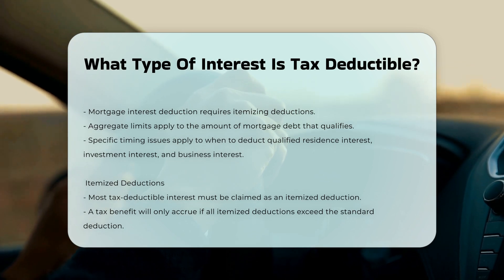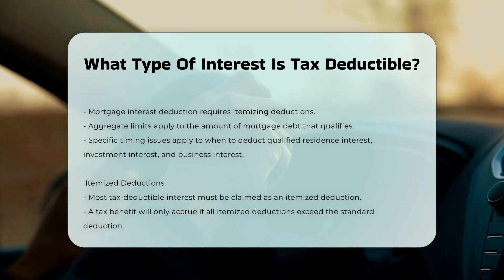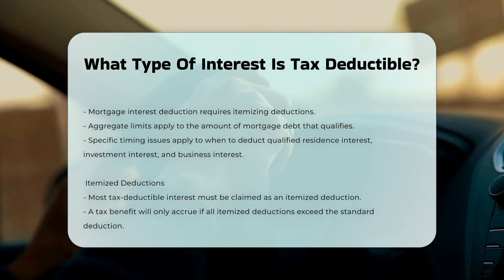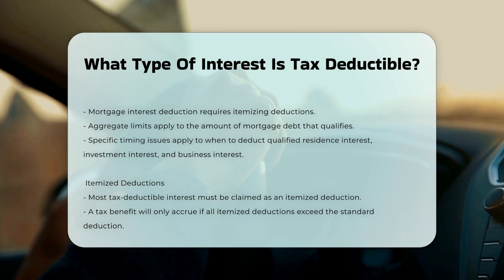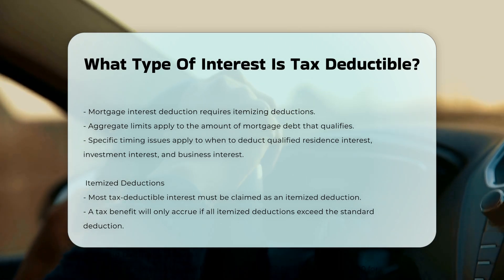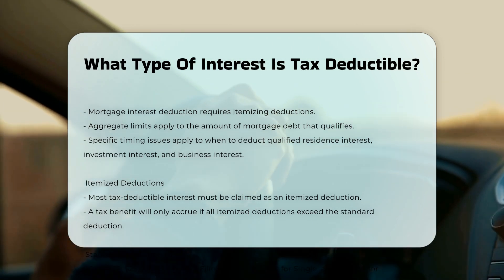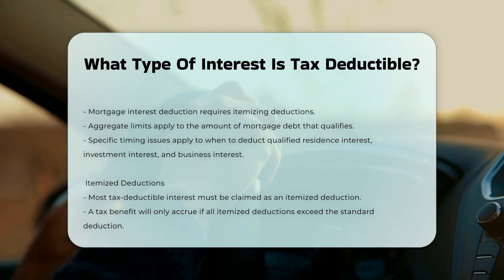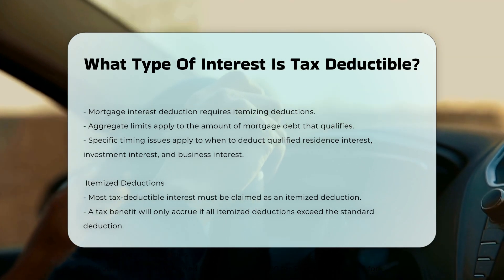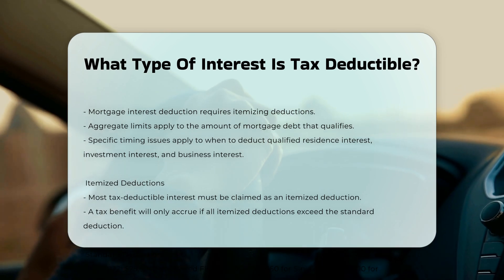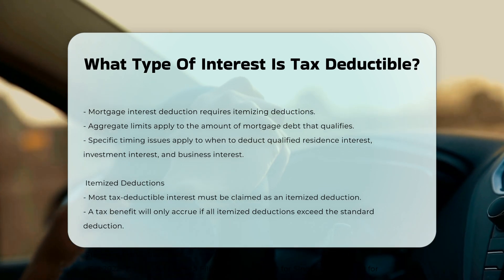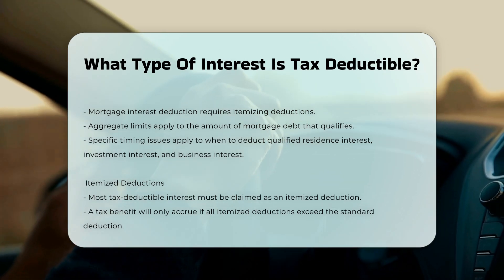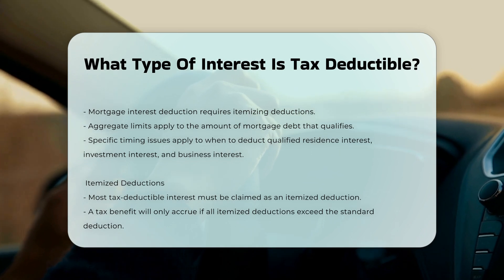Timing and limitations. There are timing issues and specific limitations for deducting qualified residence interest, investment interest, and business interest. For example, the mortgage interest deduction requires itemizing deductions, and there are aggregate limits on the amount of mortgage debt that qualifies.